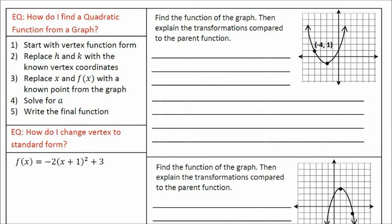In a previous video, I showed you how to find the function if you're given the parabola, but the vertex had to be at 0,0. It was a special case. Now in this video we're going to say it doesn't matter where the vertex is — we can find the equation or the function of a parabola no matter where it is on the graph. The essential question in this video is: how do I find a quadratic function from a graph? No longer are we saying the vertex has to be at 0,0.